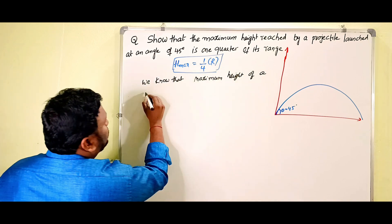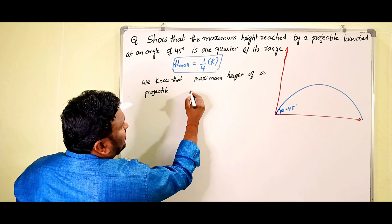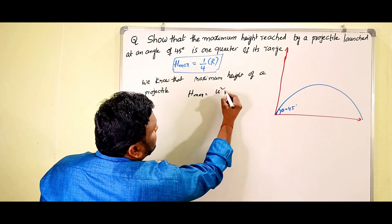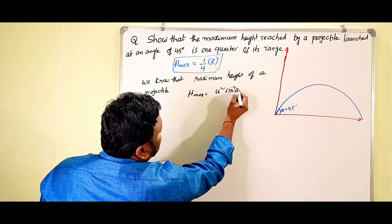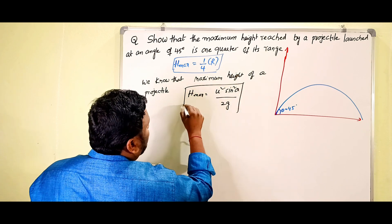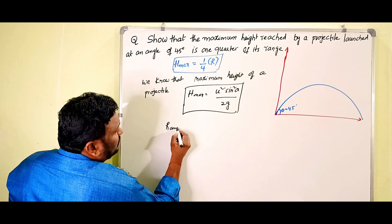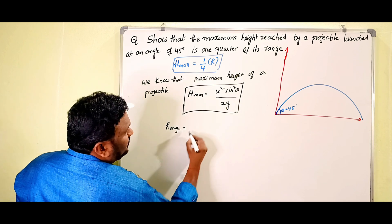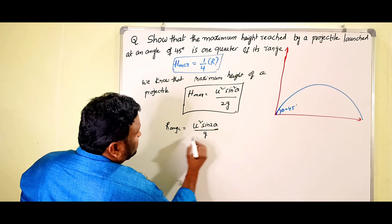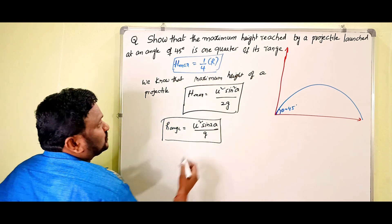For that, very simply, we know that the maximum height of a projectile is: H_maximum = u² sin²θ / 2g. This is the expression for maximum height — equation (1). Similarly, the range is: R = u² sin2θ / g. This is the formula for range — equation (2).